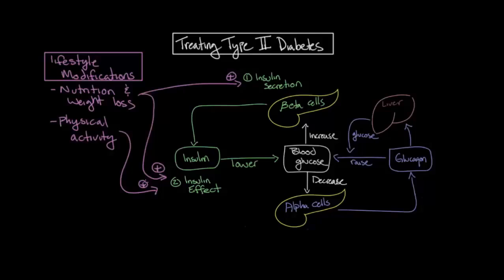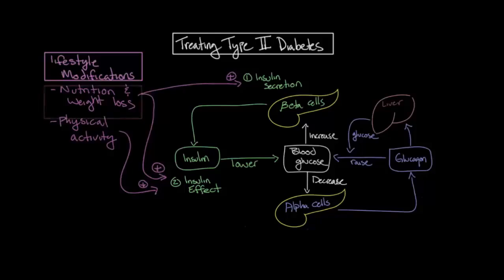In addition to lifestyle modifications, there are many different medications available to treat type 2 diabetes. However, it can be confusing to keep them all straight. Instead of discussing each of the medications individually, let's classify the different medications into groups based on their mechanism of action and how it relates to our diagram of glucose regulation.